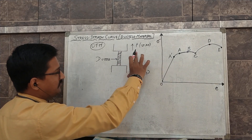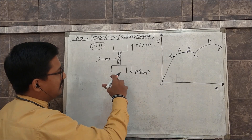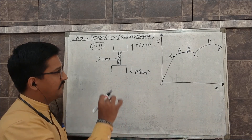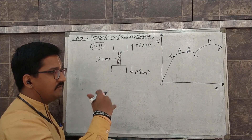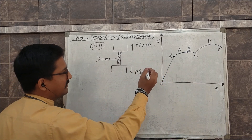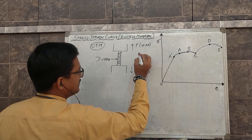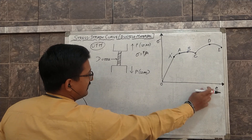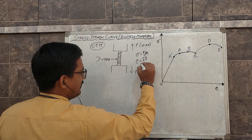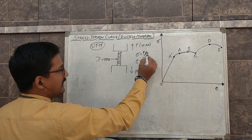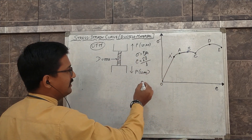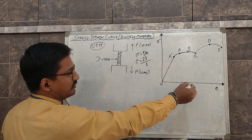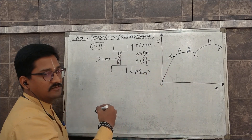When the tensile load is being applied, within a certain period of time this material or rod will finally break. How it behaves is shown in terms of a graph. So sigma is nothing but P by A, and the strain is nothing but delta L by L. Load upon area at every instant of time, and change in length upon original length at every instant of time, is being plotted on a graph — and this is how the graph is obtained.